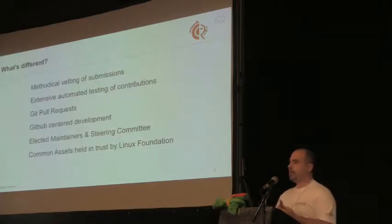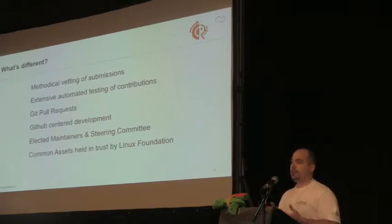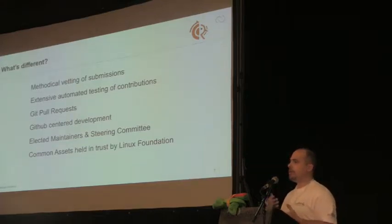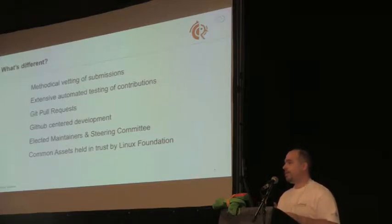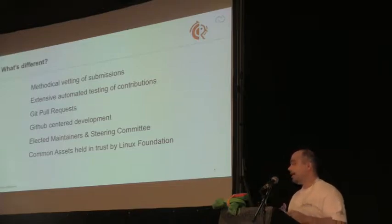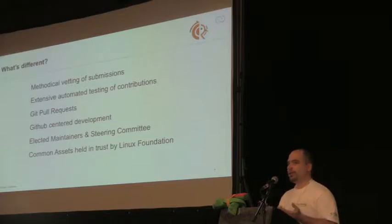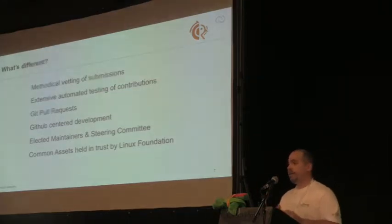The difference between Quagga development and Free Range Routing is that it's a more structured way of development. It all works through GitHub with git pull requests, so it's very easy to participate. There's automated testing to prevent issues, and it's backed by the Linux Foundation, so there's not a single person in charge who controls all the assets of the project.